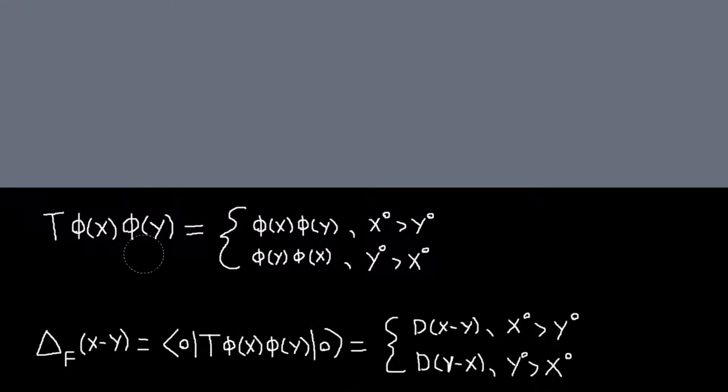And according to this time ordering thing, if x^0 is greater than y^0, then it's just exactly what we had before. So that becomes D of x minus y. And otherwise, it's phi(y), phi(x), in which case it's D(y minus x).